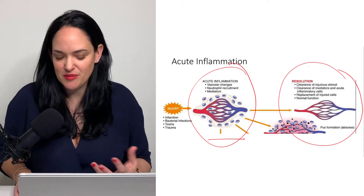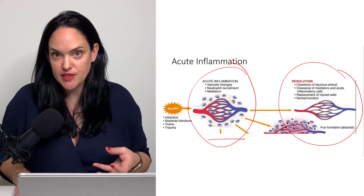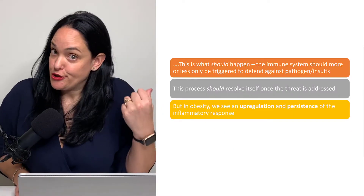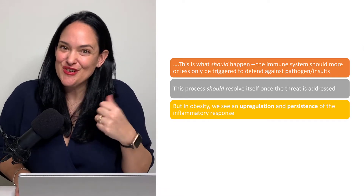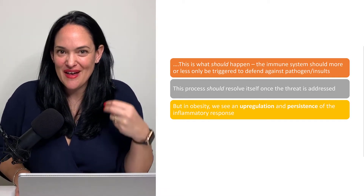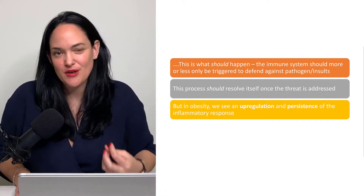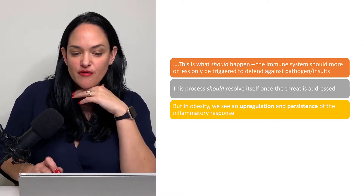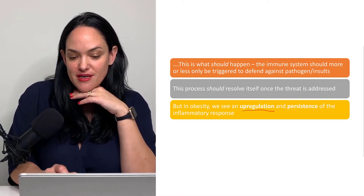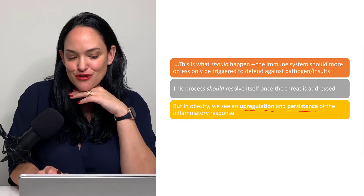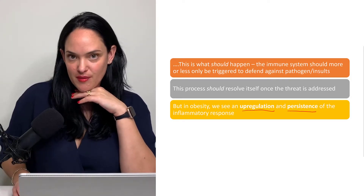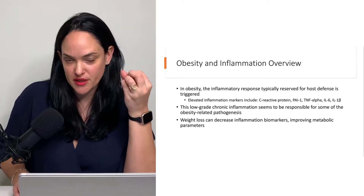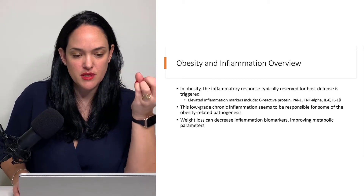However, as you're probably guessing, that's not the case in obesity. That resolution should only be triggered when there's some sort of pathogen or cellular injury or something that the body needs to get rid of. However, in obesity, we see an upregulation and persistence of the inflammatory response, which is partly responsible for the comorbidities that we see with obesity.